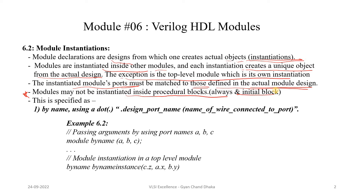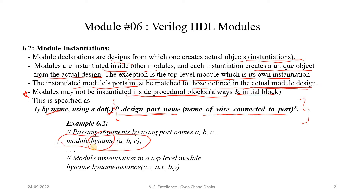There are two ways to instantiate a module in a top-level design. The first is by name — using a dot notation: dot design-port-name and the name to which that port is connected in the top-level design. Here we have an example: the module name is 'by_name' and it has three ports A, B, and C. When instantiating this module, we use dot notation.